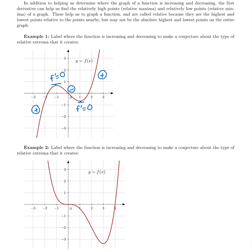Now we want to find where the relative max and min are. One way is to look at the graph and identify them directly. Another way is to make a sign chart, just like on the previous page. The first and most important thing that goes on the sign chart is where the derivative is zero. For this example, the first place where the derivative is zero is at x equals negative one.